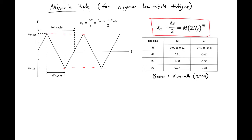Next we're going to talk about Miner's Rule, which is useful if we have some kind of irregular strain history.